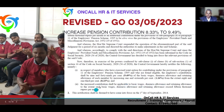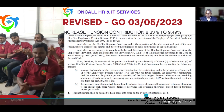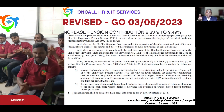Class 2 clearly defines that the increased contribution shall be applicable on basic wage, DA, and retaining allowance to the extent such amounts exceed ₹15,000 per month — the statutory limit. Whatever amount exceeds that, only for that amount, 1.16% should be calculated. The effective date is 1st September 2014, meaning for higher pension optees, from that date the employer's share includes this additional 1.16%.